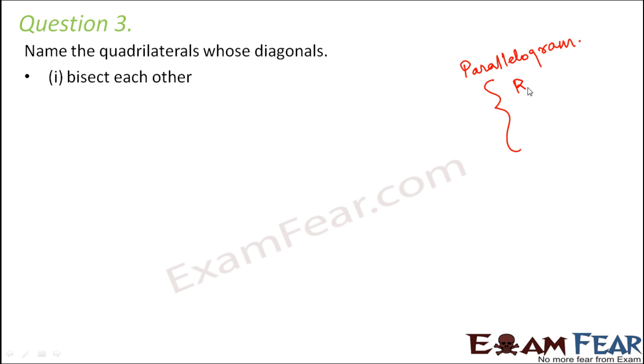You think of the special parallelograms—they also come under parallelogram anyways because all rectangles are parallelogram, all squares are also parallelogram, all rhombuses are also parallelogram. So parallelograms are those where the diagonals bisect each other.